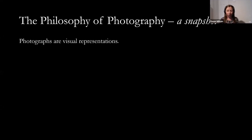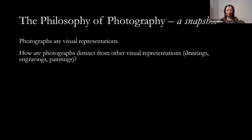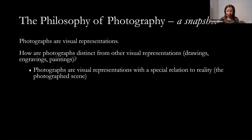If we're going to give a snapshot of the philosophy of photography, we can start with something we can presumably agree on: photographs are a kind of visual representation. We can find ourselves asking the question, how are photographs distinct from other kinds of visual representations — drawings, engravings, paintings, and so on? One way of finding an answer is to look at the way we're intrigued by photographs, what grips us about how we experience and use them. Generally speaking, an answer seems to be that photographs are visual representations with some kind of special relation to reality.